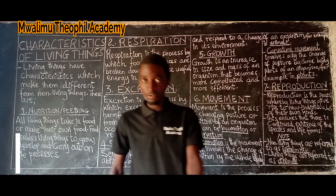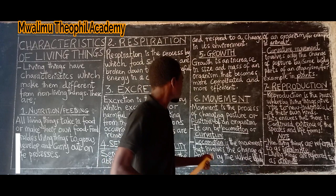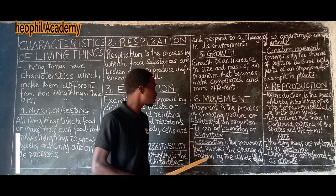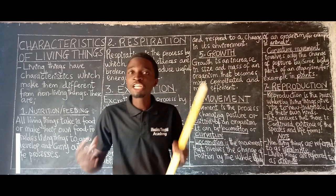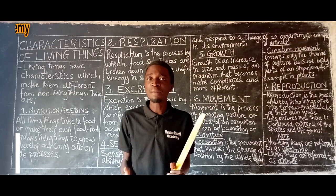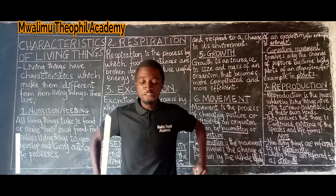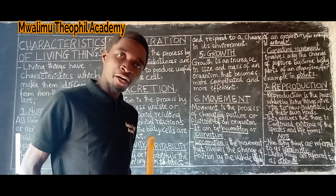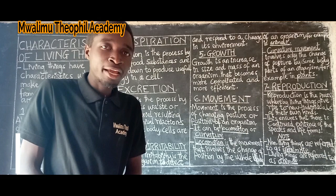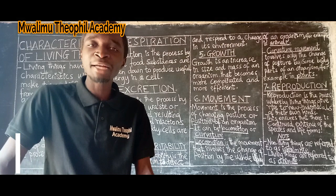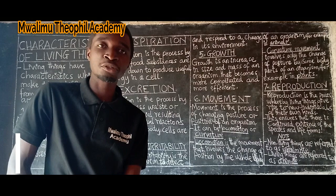Locomotion is the type of movement that involves the change of position by the whole body of an organism, and it occurs mostly in animals. For example, when I jump from one position to another, all my body parts are in a new position — I have changed from position A to position B. This kind of movement is referred to as locomotion.